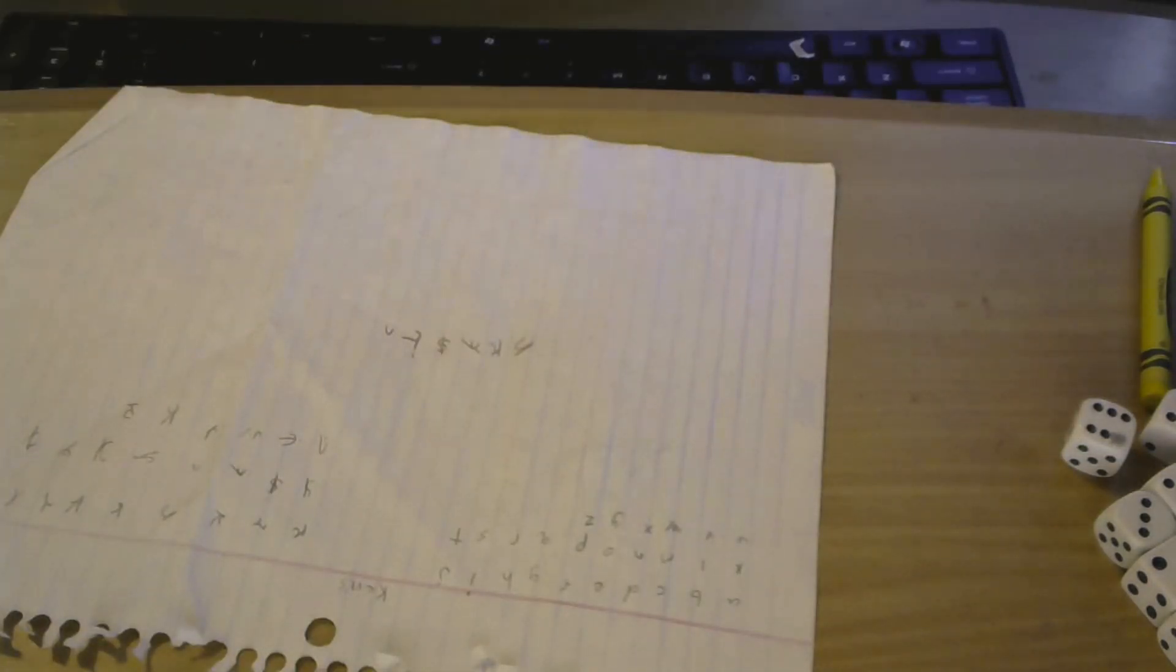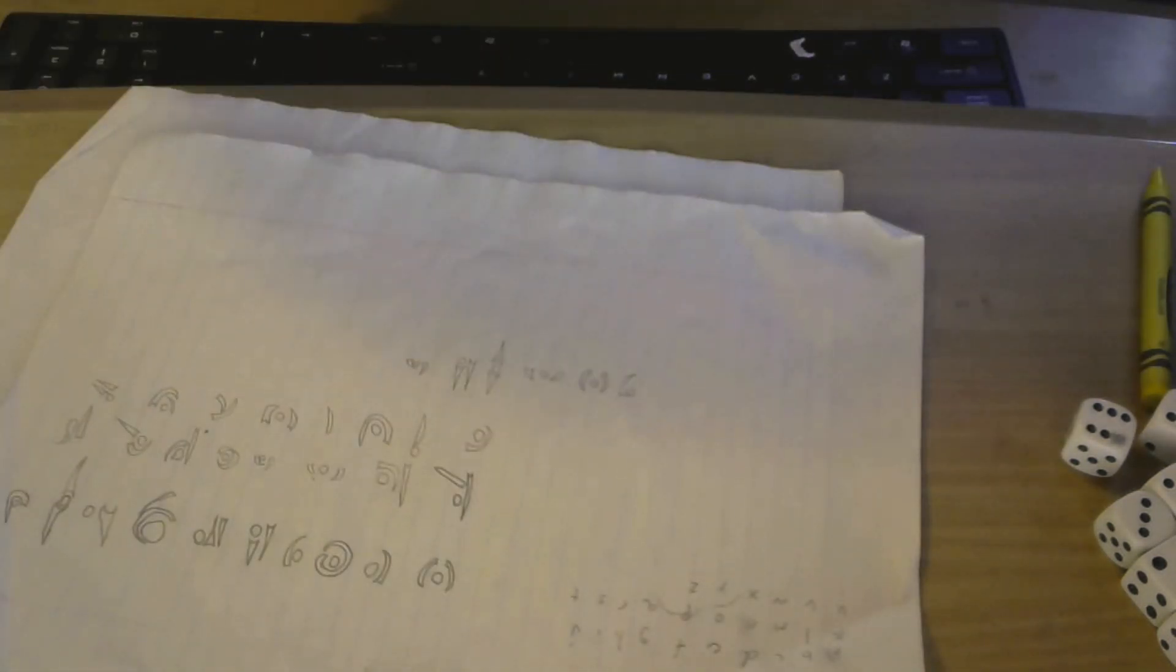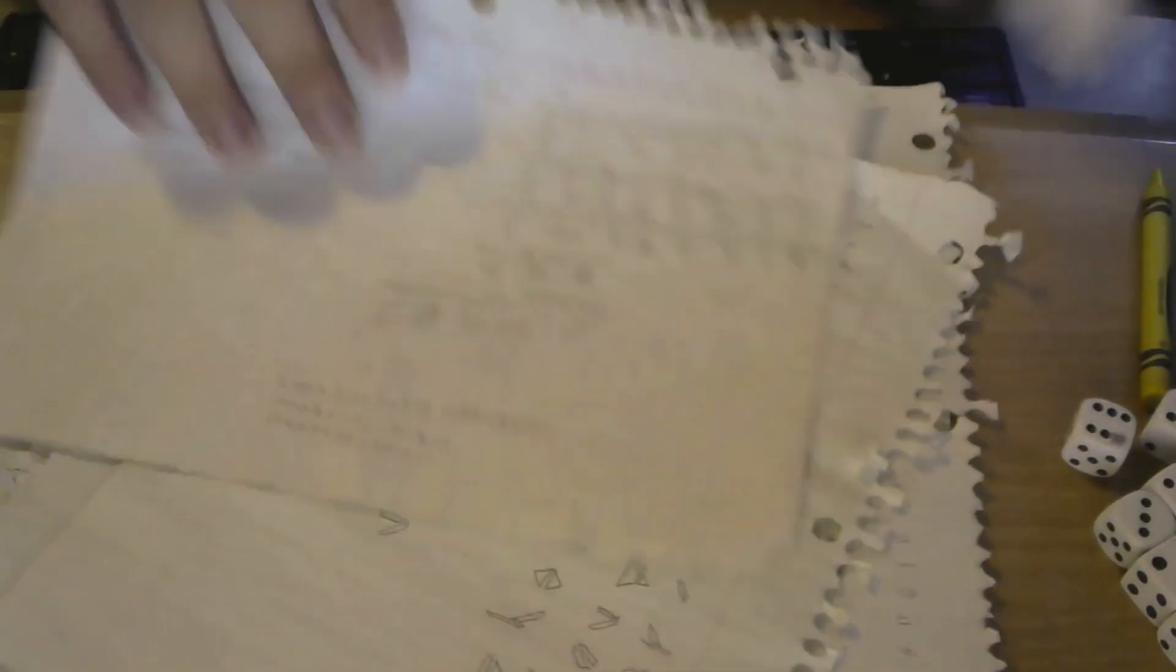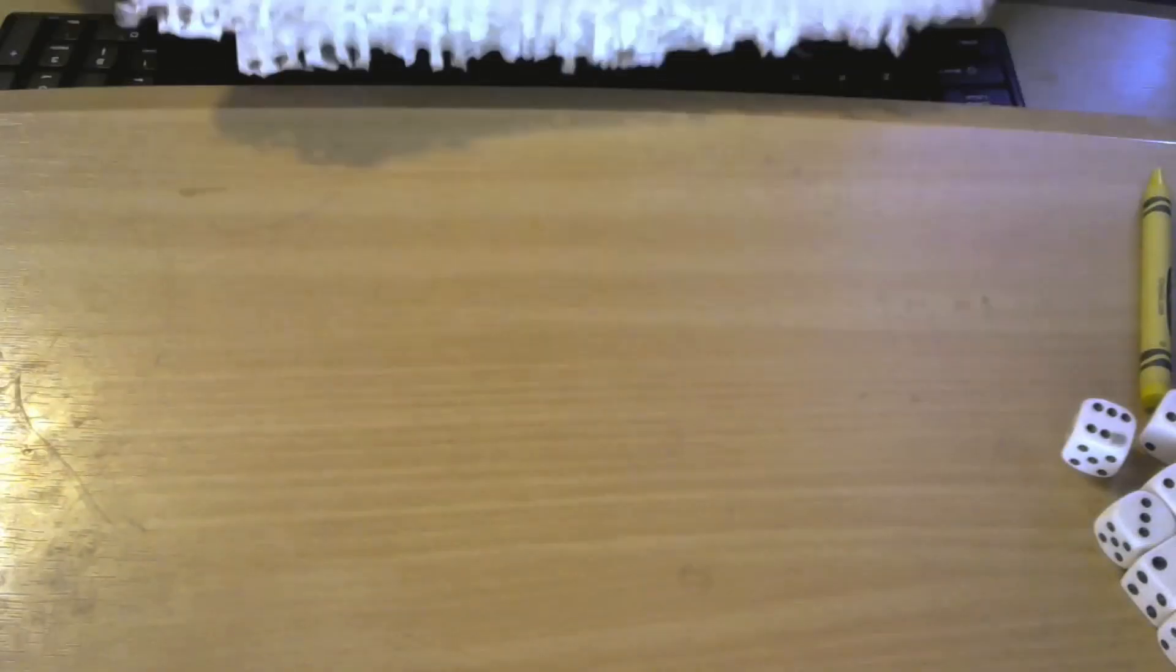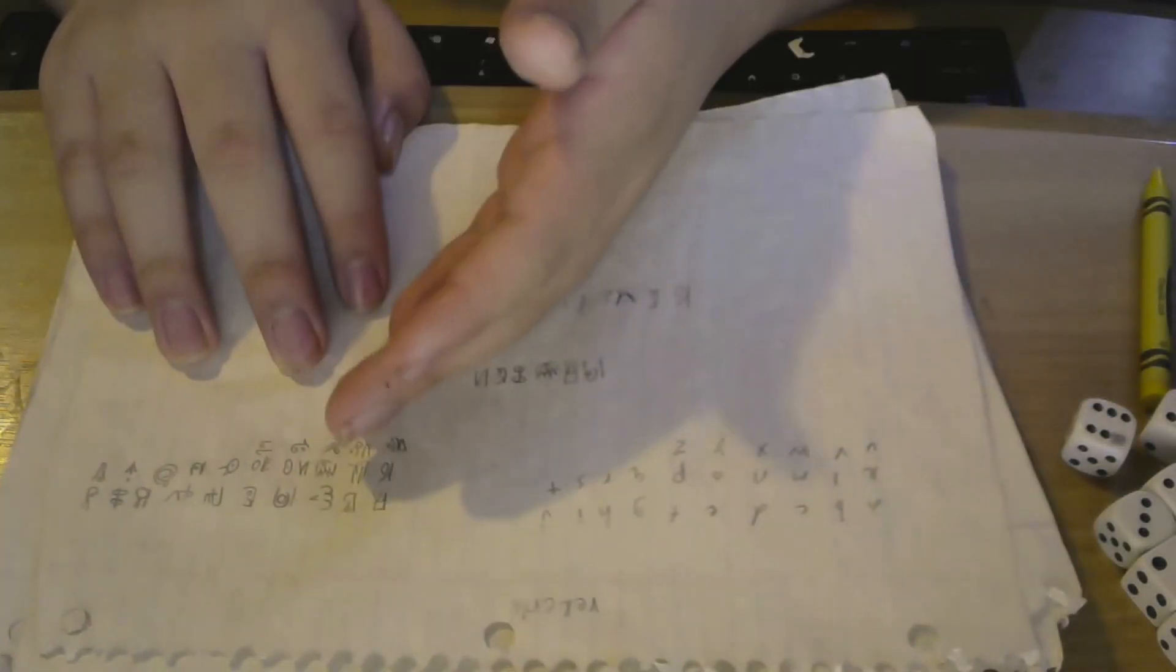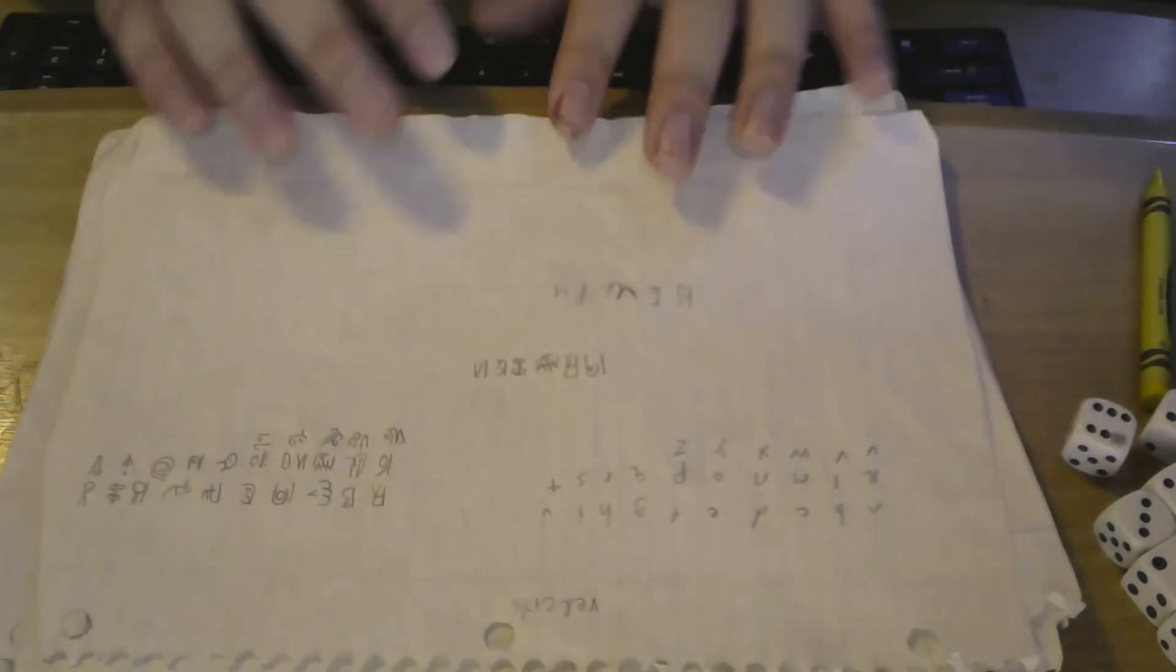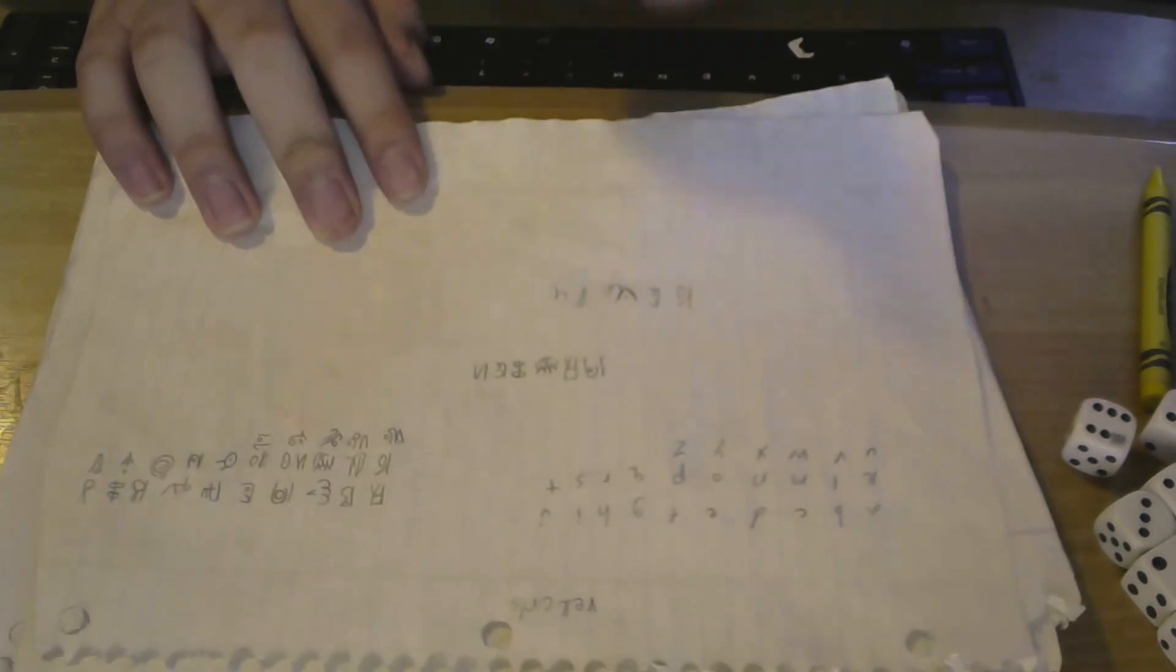Yeah, so I have at least like 20... 28 languages I have created. I mean, they all speak English. The reason why all my aliens speak English and not this... I mean, they write in their own language, they just don't write in English language. But the reason why they speak English is because there's a backstory for that.